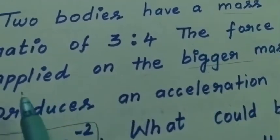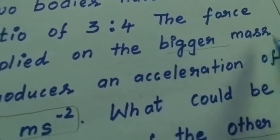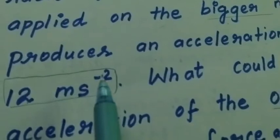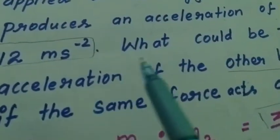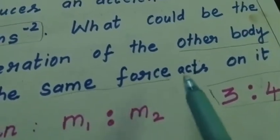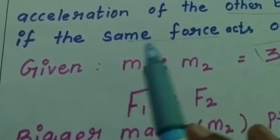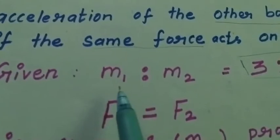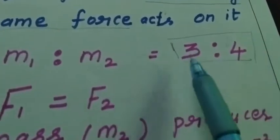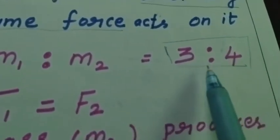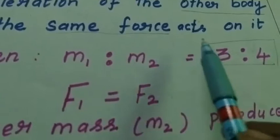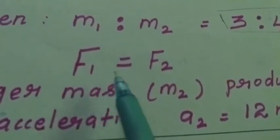the force applied on the bigger mass produces an acceleration of 12 meter per second square. What could be the acceleration of the other body if the same force — very important, same force — acts on it? So here, given: mass m1 is to m2 equal to three is to four. So mass of the first object is three and the mass of the second object is four. We know that same force acts on the body, so f1 equal to f2.